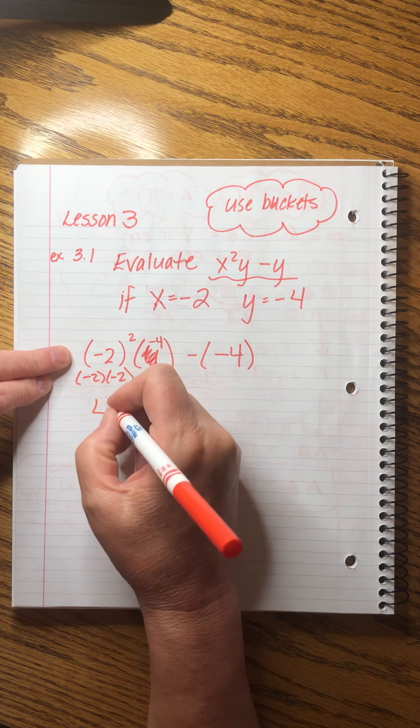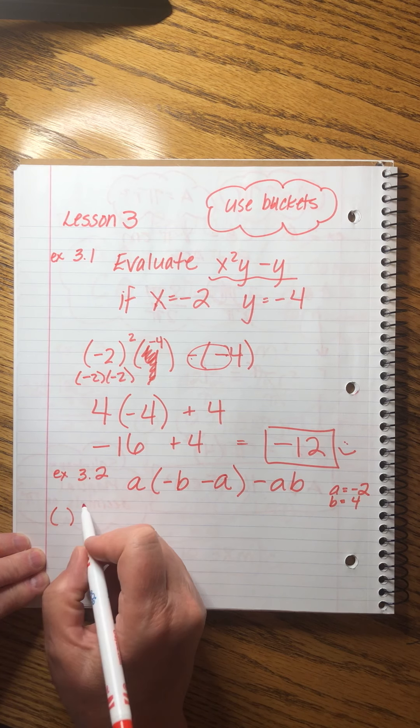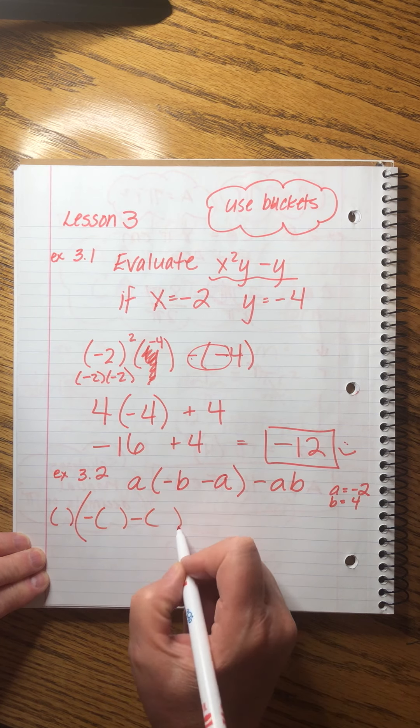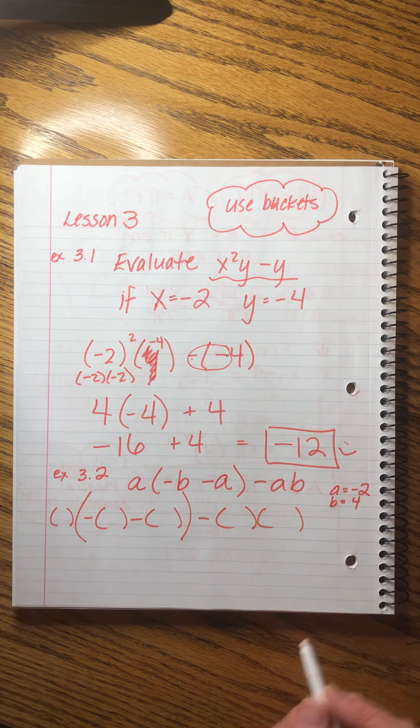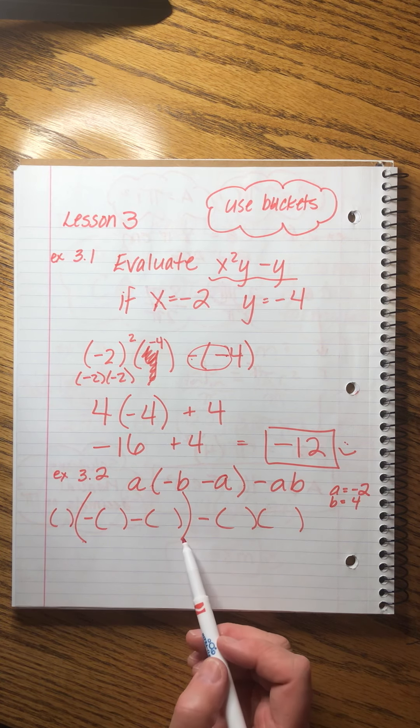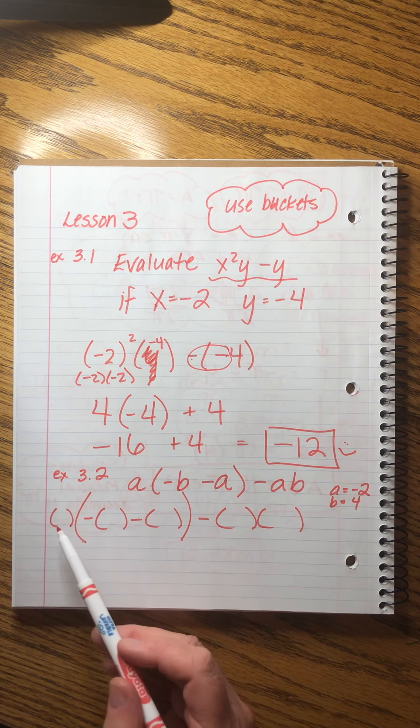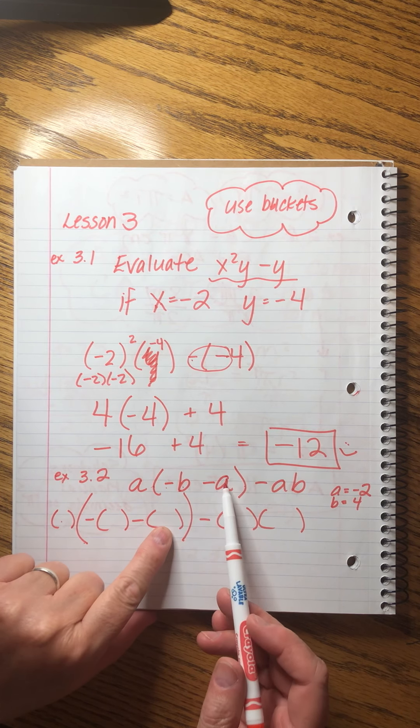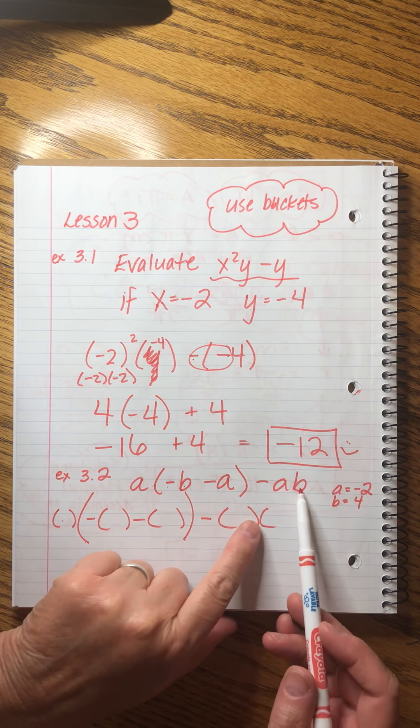All right. Example 3.2. This one's going to get a little bit longer. I'm going to write the original expression up here: a minus b minus a. See, it's just confusing. There's so many minus signs. And then a equals minus 2, b equals 4. So I'm going to rewrite this. Notice that these parentheses that were already in the expression, I exaggerated and I made them really big, so that I can keep track of what's going on there. And then this is the a minus b minus a, closing parentheses minus ab.